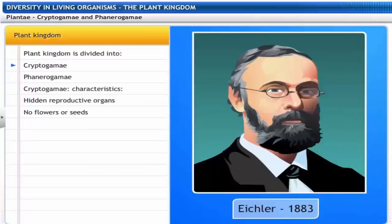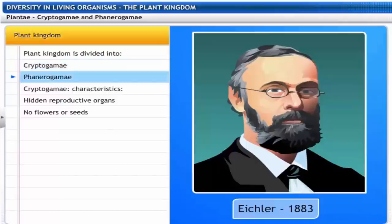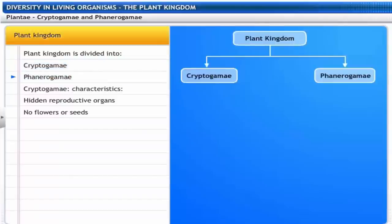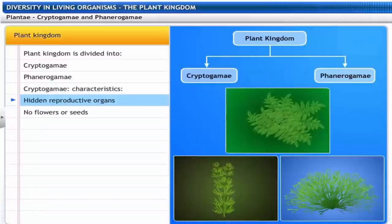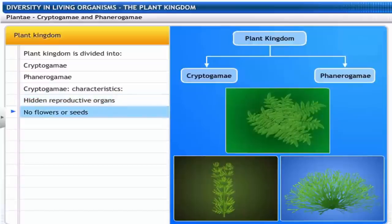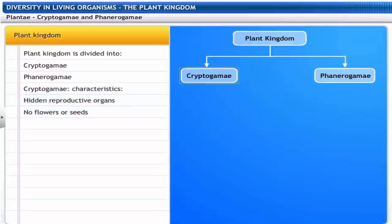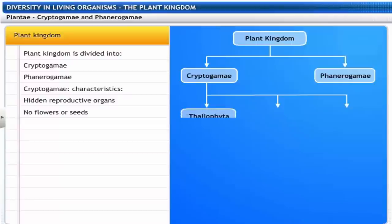In 1883, Eichler classified the plant kingdom into two sub-kingdoms: Cryptogamae and Phanerogamae. The sub-kingdom Cryptogamae includes plants with hidden reproductive organs — these plants do not bear flowers or seeds. Cryptogamae are further divided into three groups: Thallophyta, Bryophyta and Pteridophyta.